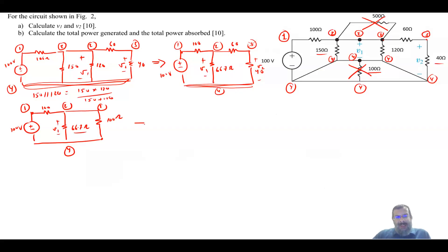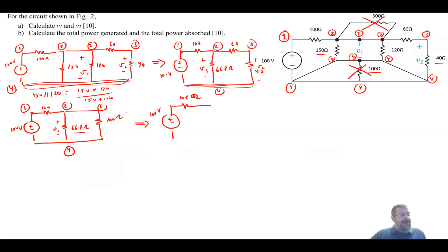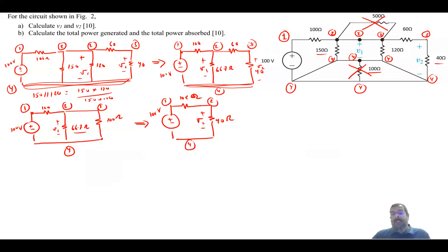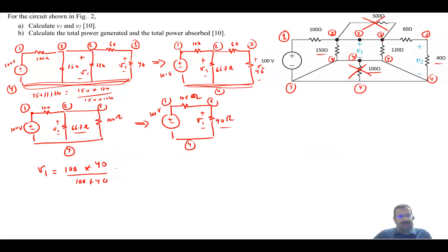I will now add the 66.7 ohm and the 100 ohm further in parallel — multiply them and divide by their summation — to get a total of 40 ohm. Because these two are in parallel, node 2 is preserved; V1 is still the voltage between nodes 2 and 4. Now I can use voltage division: V1 equals the main voltage 100 times the 40 ohm divided by 100 plus 40, which gives V1 equal to 28.57 volt.